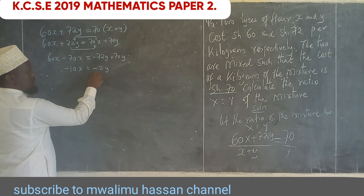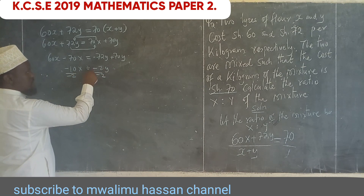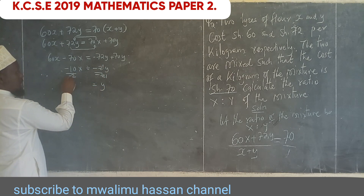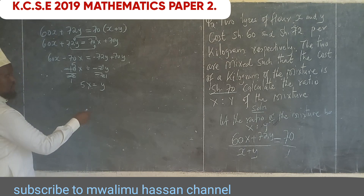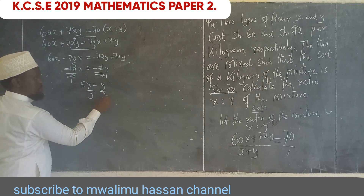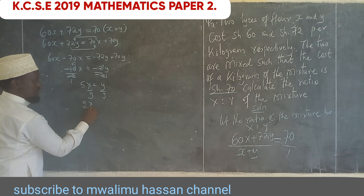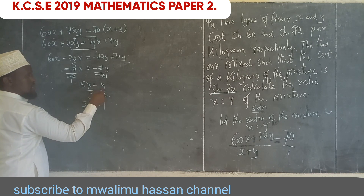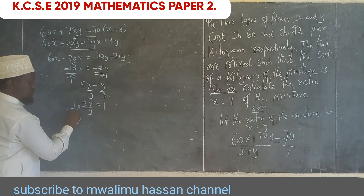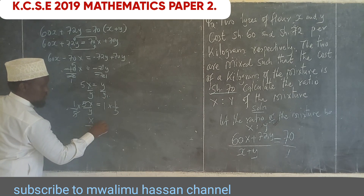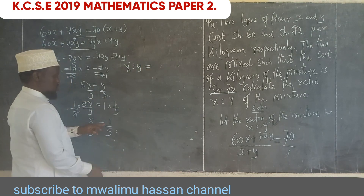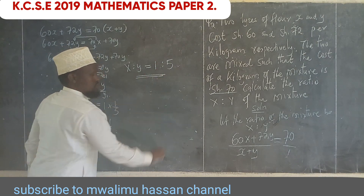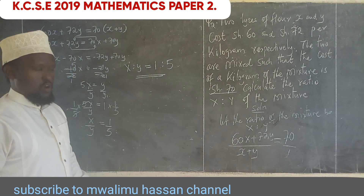Dividing both sides by −2: 5X = Y. Then dividing both sides by Y: 5X/Y = 1, so X/Y = 1/5. Therefore the ratio X to Y of the mixture is 1 to 5.